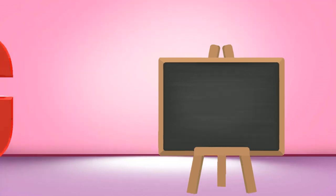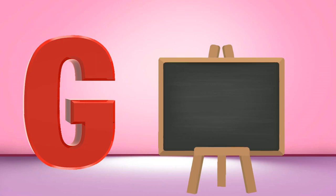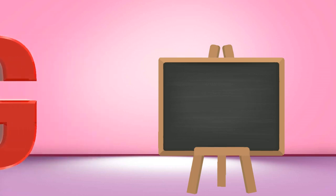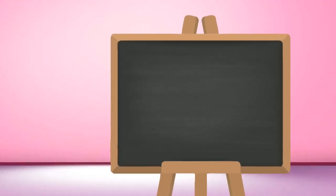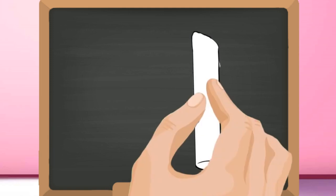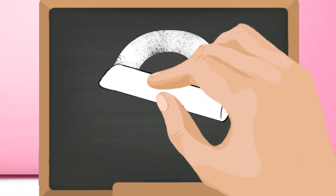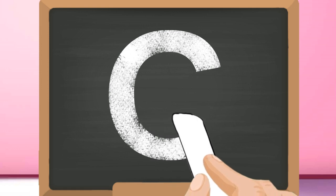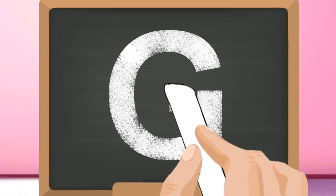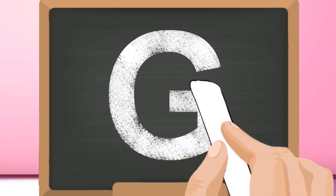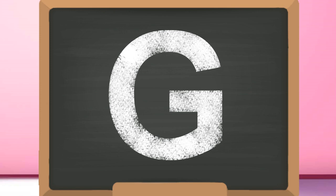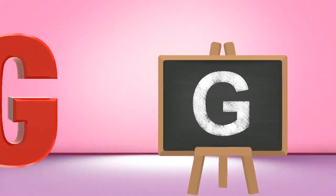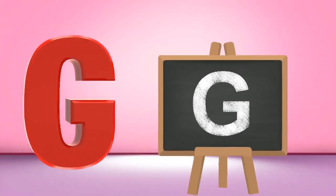G, capital G. Start from the top and draw a curve touching the bottom. And for that, till the middle, drop it with a slanting line. Then draw a standing line from the middle. Capital G.